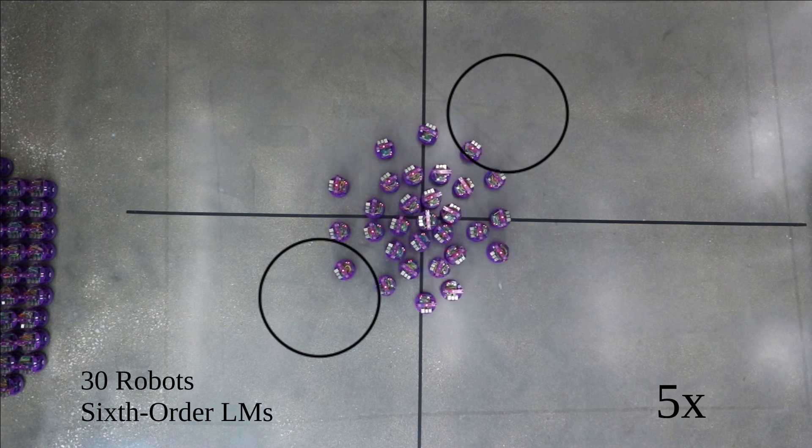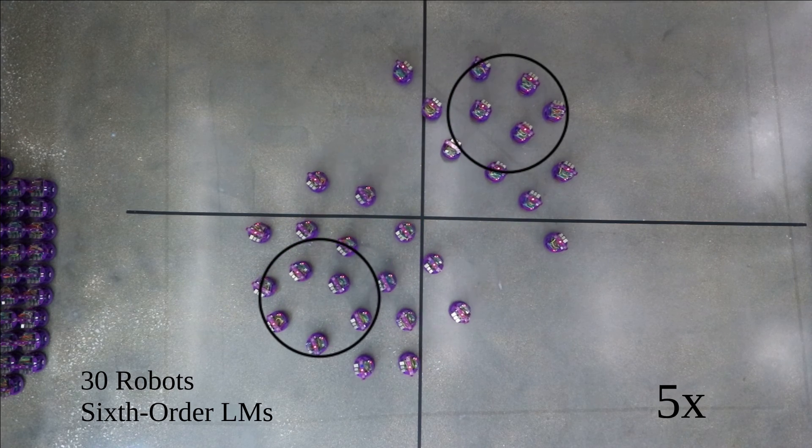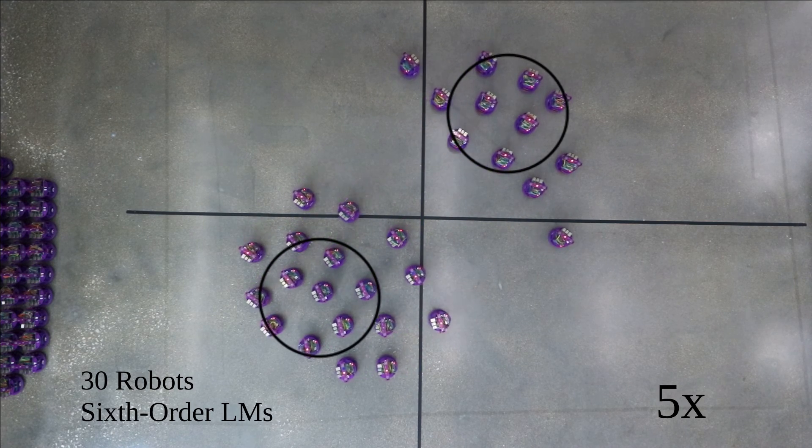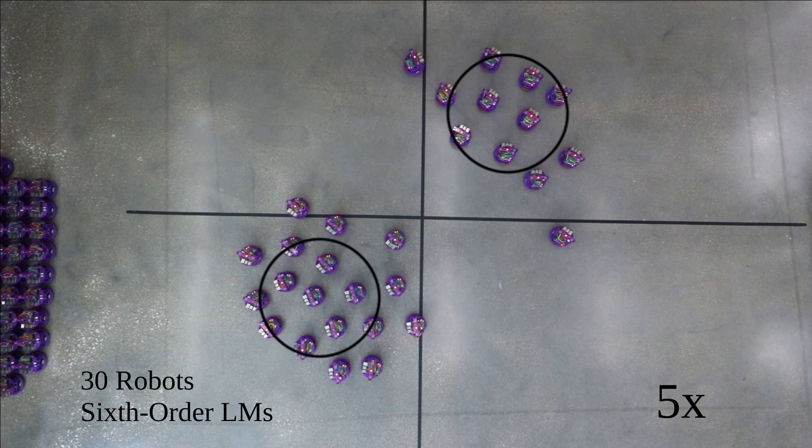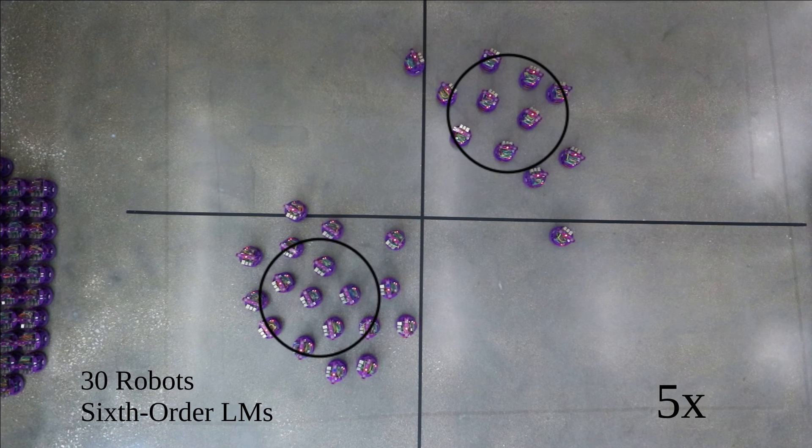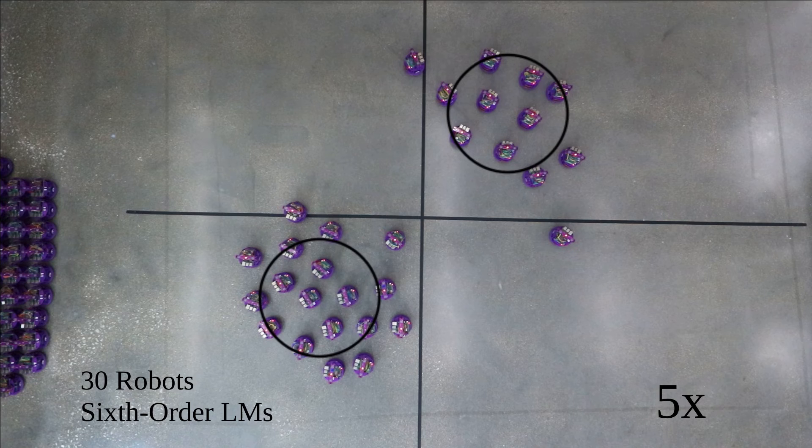Here is a video sped up 5 times of the robots forming the two discs using 6th order Legendre moments. The final swarm formation has 18 robots near the leftmost disc and 12 near the rightmost.